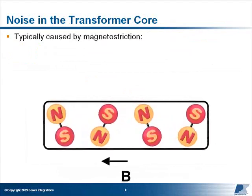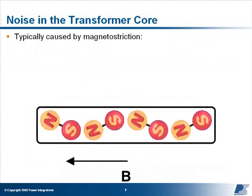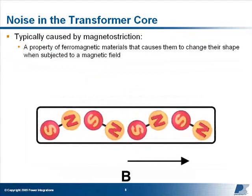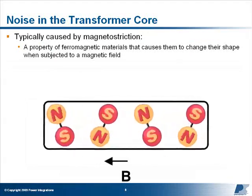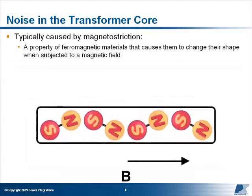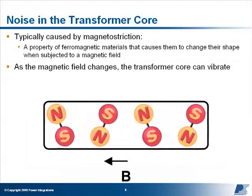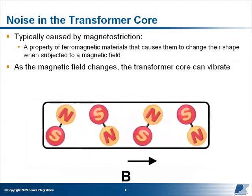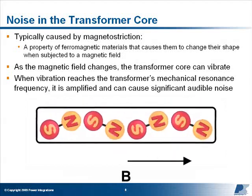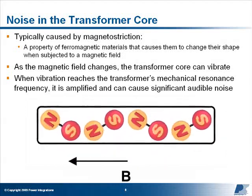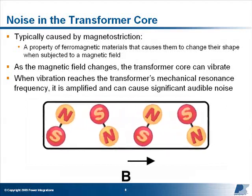Noise generated by transformer cores is caused by a similar effect called magnetostriction. Many ferromagnetic materials change shape when subject to a magnetic field. As the magnetic field changes in the transformer core, this can cause it to physically vibrate. When this vibration reaches the mechanical resonance frequency of the transformer, it will be amplified and may cause large amounts of audible noise.